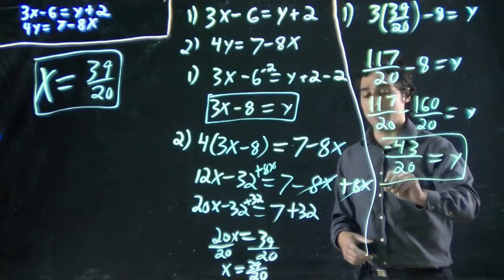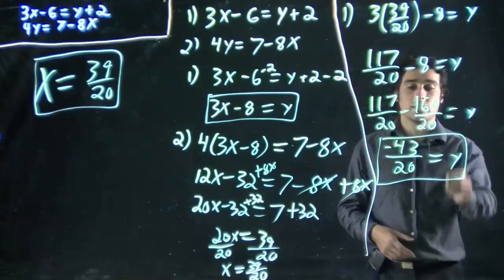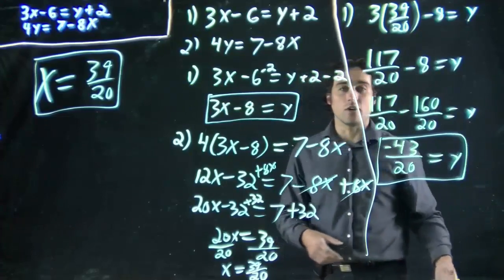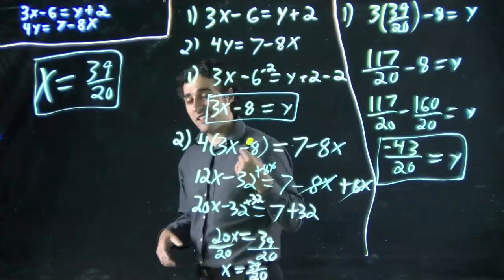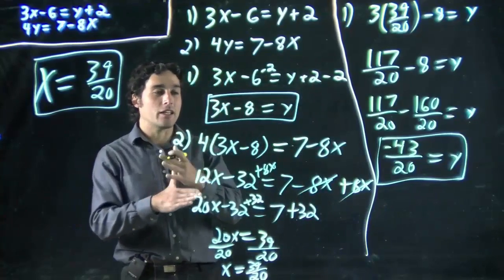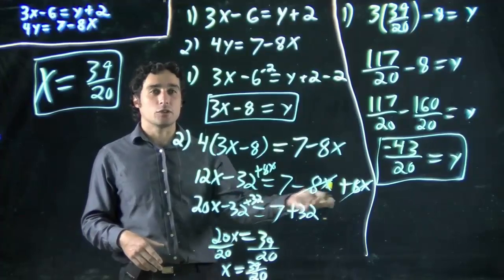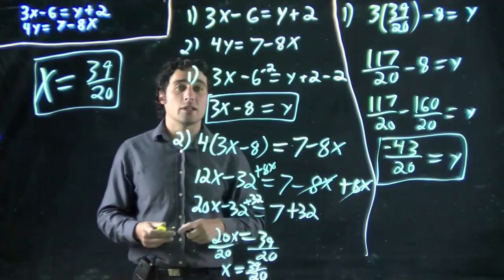And that is the second part of my solution. y, x, I've solved both. This would be, if we were solving an equation of a line, this would be the coordinate where these two lines hit, where they meet. In this case, we solved x and y, and that's all we need to do.